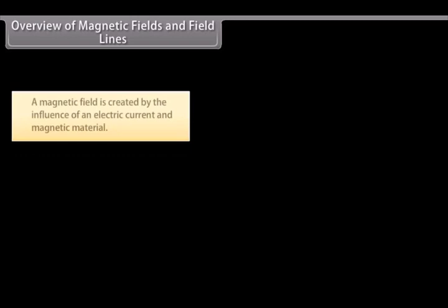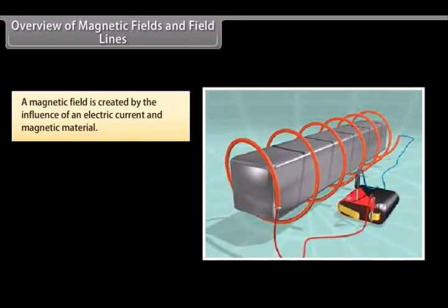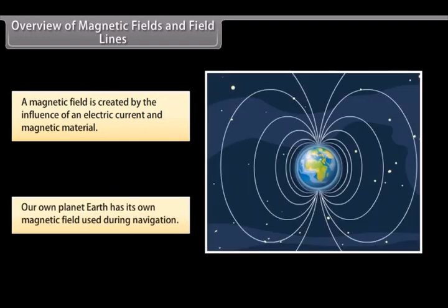Overview of magnetic fields and field lines. A magnetic field is created by the magnetic influence of an electric current and magnetic material. Our planet Earth produces its own magnetic field, which is an important factor during navigation.